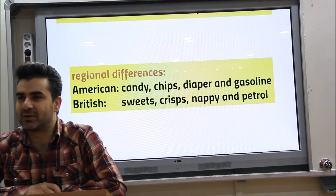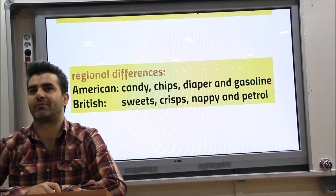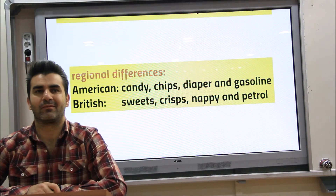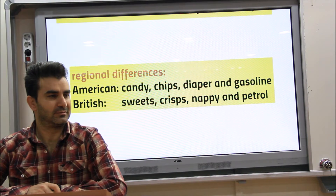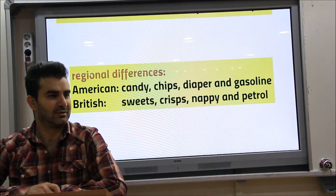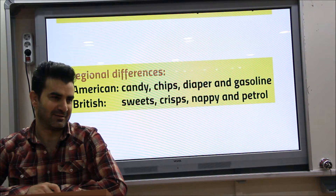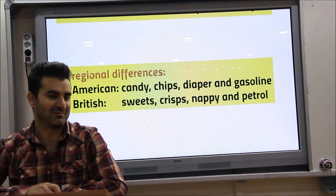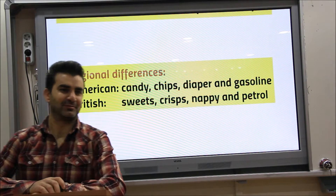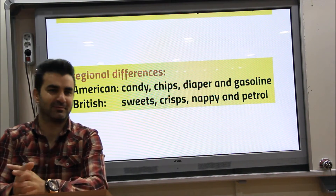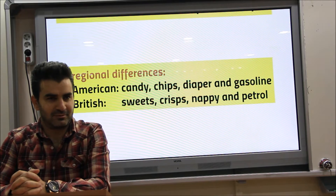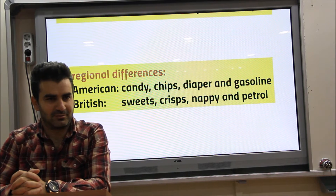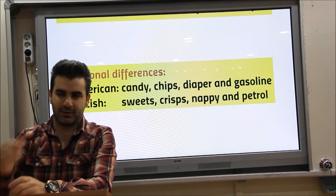Are there any other examples? You know how people here say 'günah' a lot — that means 'yazık', doesn't it? Yes, it expresses pity or sorrow for someone. Also, in the Black Sea region they say 'çember' for simit.